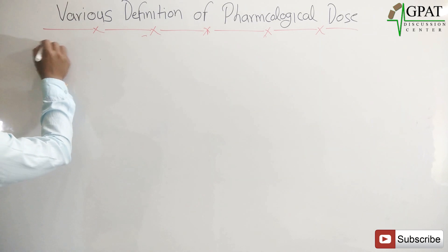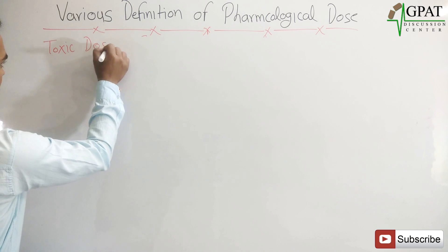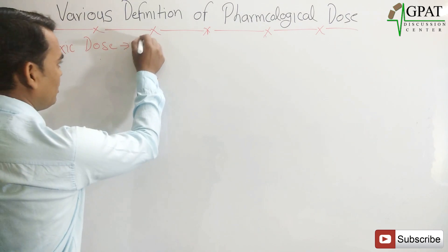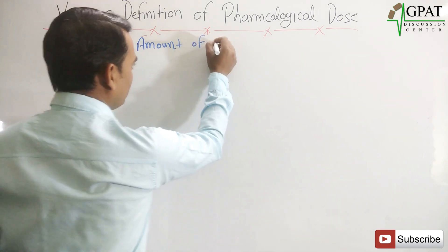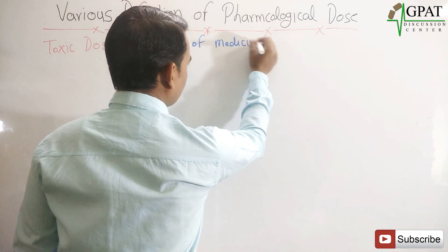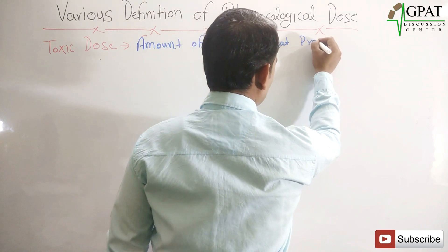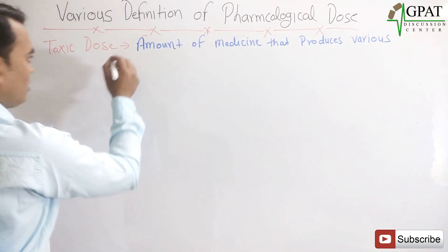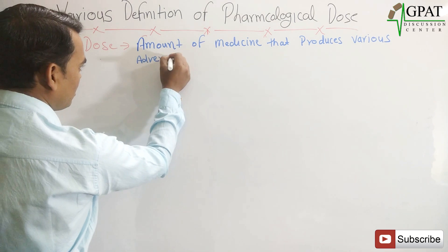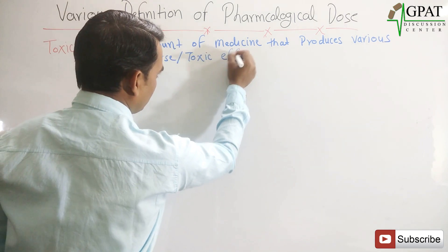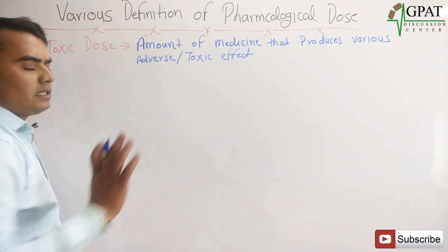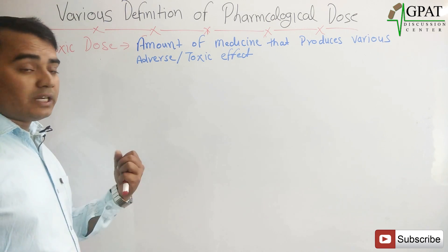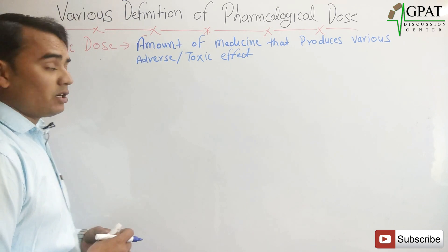First, when we talk about the toxic dose — if any medicine has a toxic dose, what is the meaning of it? The amount of medicine that produces various adverse or toxic effects. Adverse effects can be less; toxic is mainly the concern, because adverse effects sometimes occur even at the therapeutic dose. But toxic dose is when the toxic effect comes — that is the toxic dose.